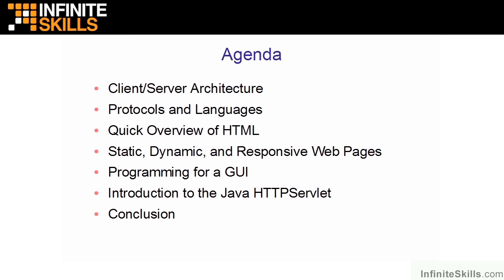What we're going to do is take some time today to look over a few things. First, we're going to spend some time looking at what a client-server architecture might involve, and then we're going to talk about some of the protocols and languages used on the web. We'll spend a little time reviewing HTML and making sure we have a common base of some tags we'll be seeing quite often. And then we're going to take a brief look at three different types of web pages: a static web page, a dynamic web page, and a responsive web page.